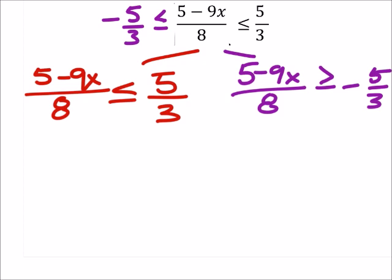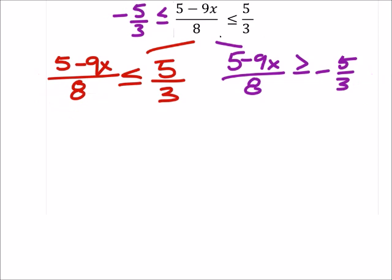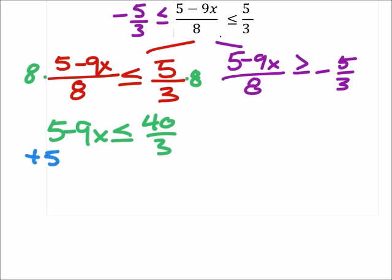On this one, we could find common denominators. I don't know if it's necessary. Alright, so let's multiply both sides by 8. And then we've got 5 minus 9x less than or equal to 40/3. And now I'm going to have to add 5 to both sides. But 5 with a denominator of 3 would be 15/3.